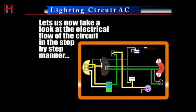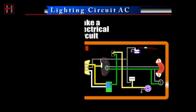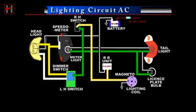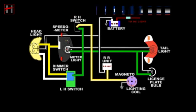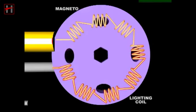Let us now take a look at the electrical flow of the circuit in a step-by-step manner. As the engine is cranked, current is generated in the lighting coil due to the rotation of the magneto rotor.